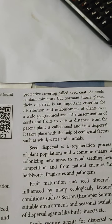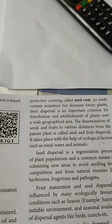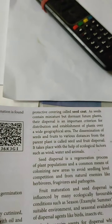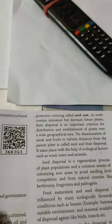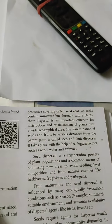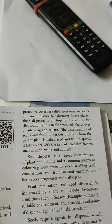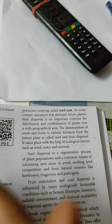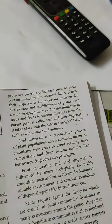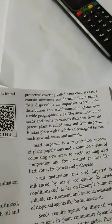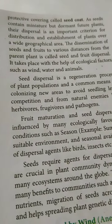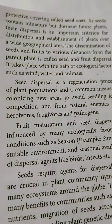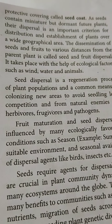Why should seeds be dispersed over a wide geographical area? If seeds accumulate in a particular place, competition will arise, which will be very detrimental and harmful to the plants. That is why seeds need to be dispersed widely — so that the chances of survivability will be more. The dissemination of seeds and fruits to various distances from the parent plant is called seed and fruit dispersal.